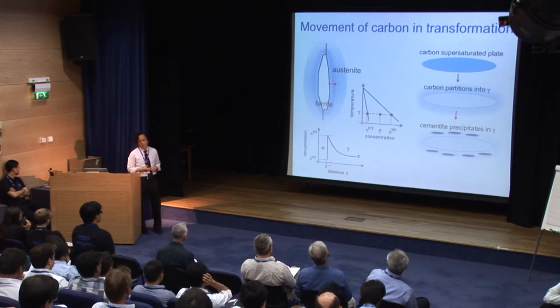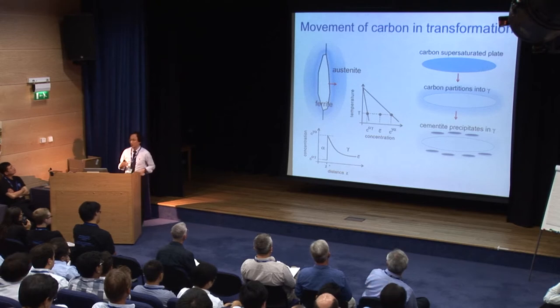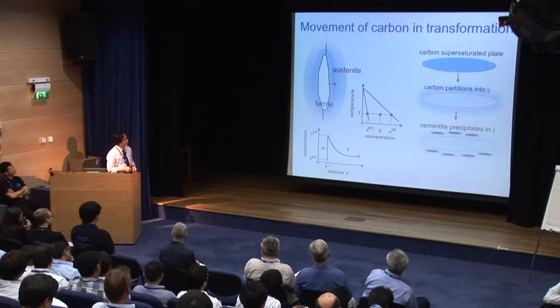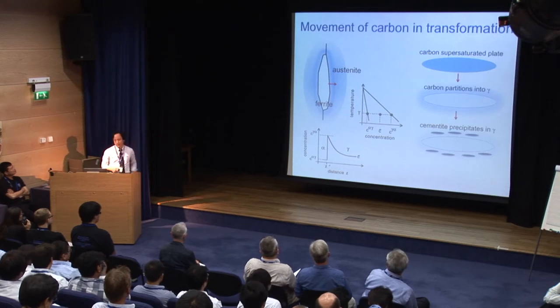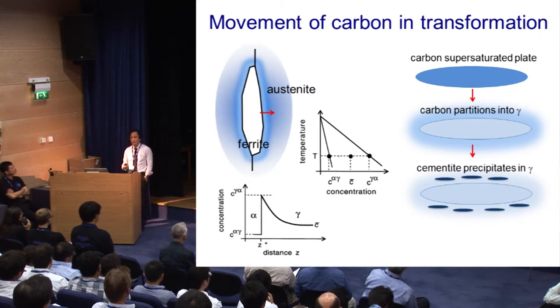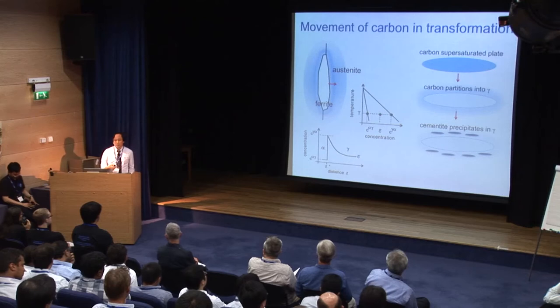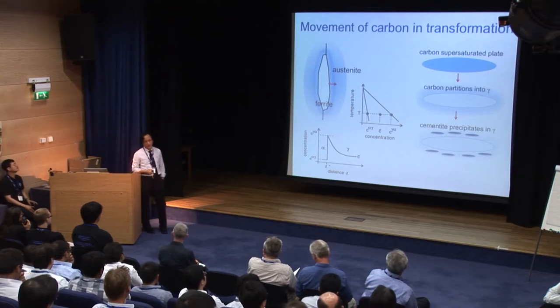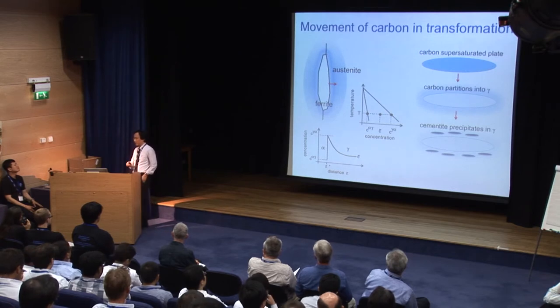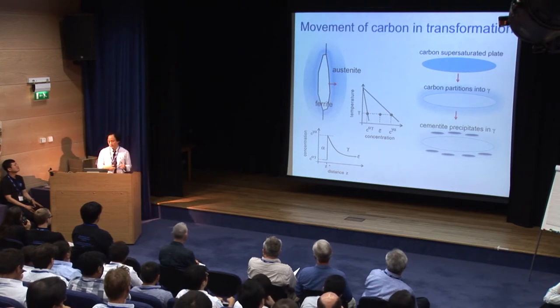This difference in solubility of carbon between ferrite and austenite causes movement of carbon when ferrite forms from austenite. When ferrite forms in a reconstructive manner, the concentration of carbon in ferrite is given by the solubility limit in the Peierls diagram. But when ferrite forms in a displacive manner, initially carbon-supersaturated ferrite forms, and then after the transformation carbon starts to partition into the austenite. Without any alloying element preventing cementite precipitation, cementite will precipitate around the austenite.